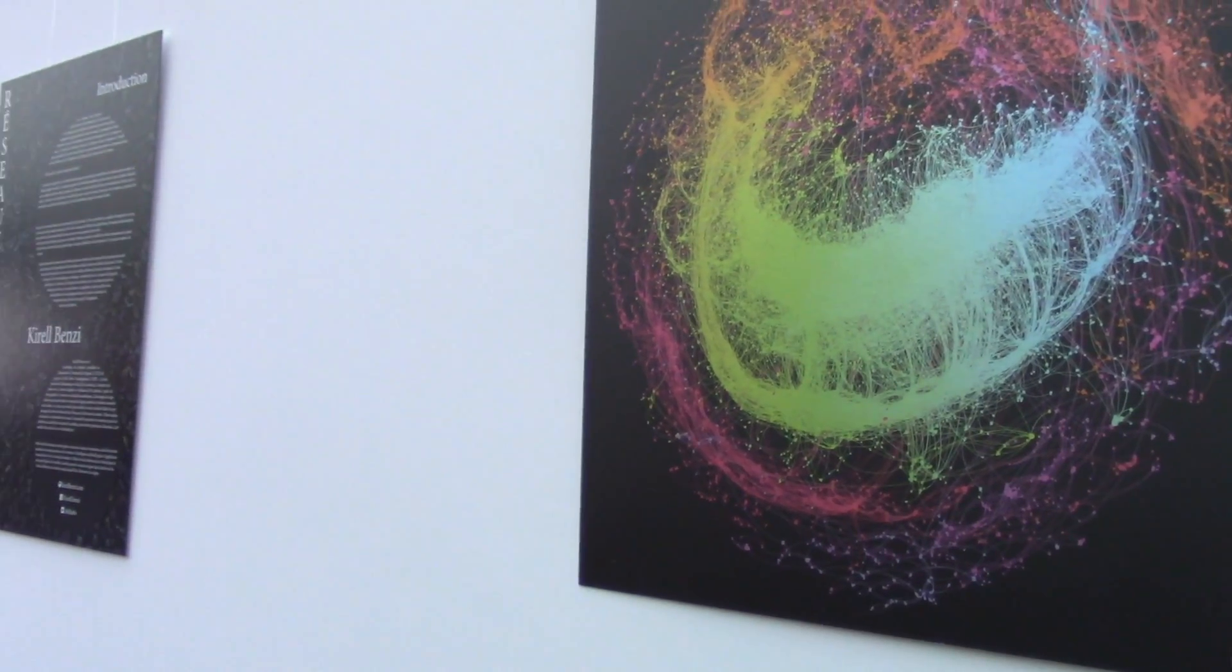Let's move on to Kirell's third artwork. Notice it's a bit special compared to the other because this one is printed on brushed aluminum, so depending on where you stand you would see different shades in the colors depending on the light.